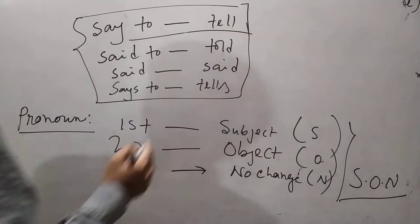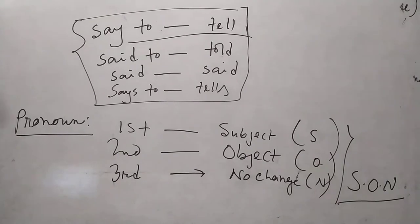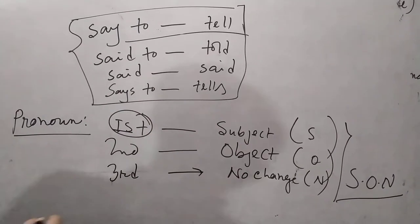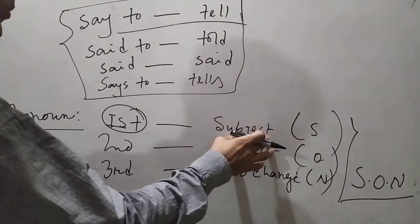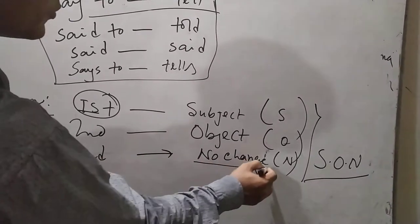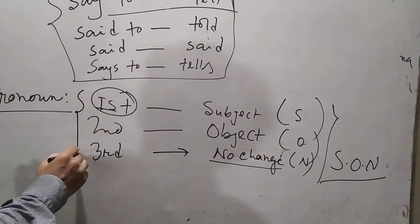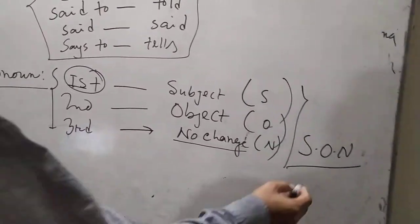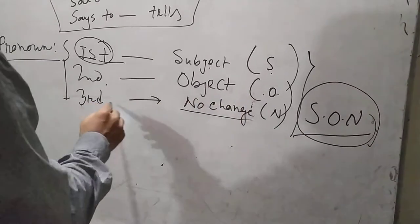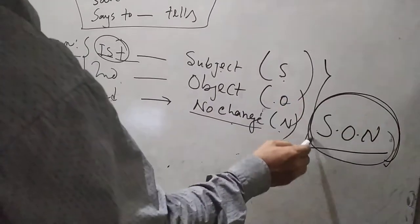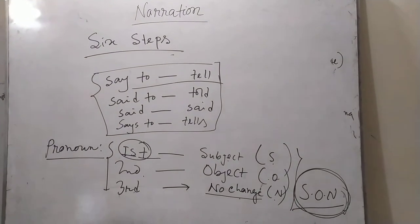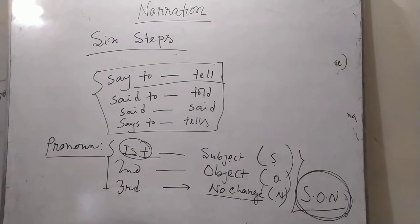Then you have to change the pronoun. If the pronoun belongs to first person, this first person indicates the subject of the reporting verb, so first person will be changed according to the subject of the reporting verb. Second person will be changed according to the object of the reporting verb. Third person will not change. If you want to remember it in an easy way, remember the acronym S-O-N: first person Subject, second person Object, third person No change. If you remember S-O-N, it will be easy for you to remember how to change pronouns.